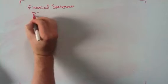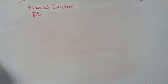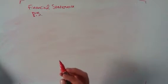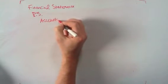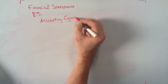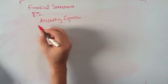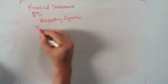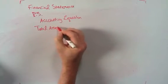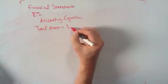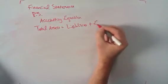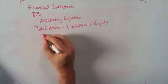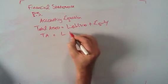Now we can talk about how all this comes over to the balance sheet. The balance sheet is pretty simple. It starts off with the overall accounting equation, which tells us that when we're doing accounting for the balance sheet, our total assets equal our liabilities plus equity. We can call that TA equals L plus E.